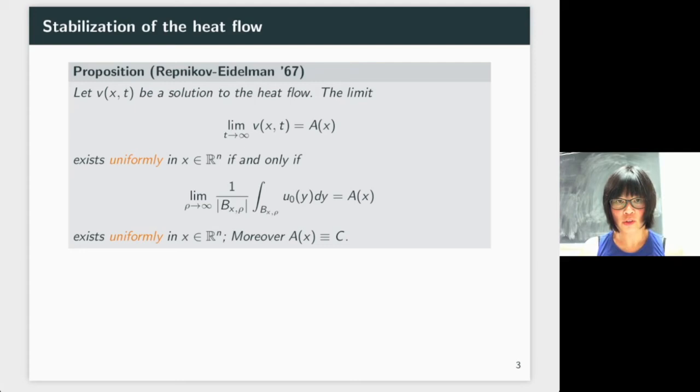So you read this as the average of the initial condition over larger and larger balls centered at x. If the average of the initial condition over larger balls centered at x exists, then the solution to the heat flow would have a limit as t goes to infinity, and will be the same as the average over larger balls.